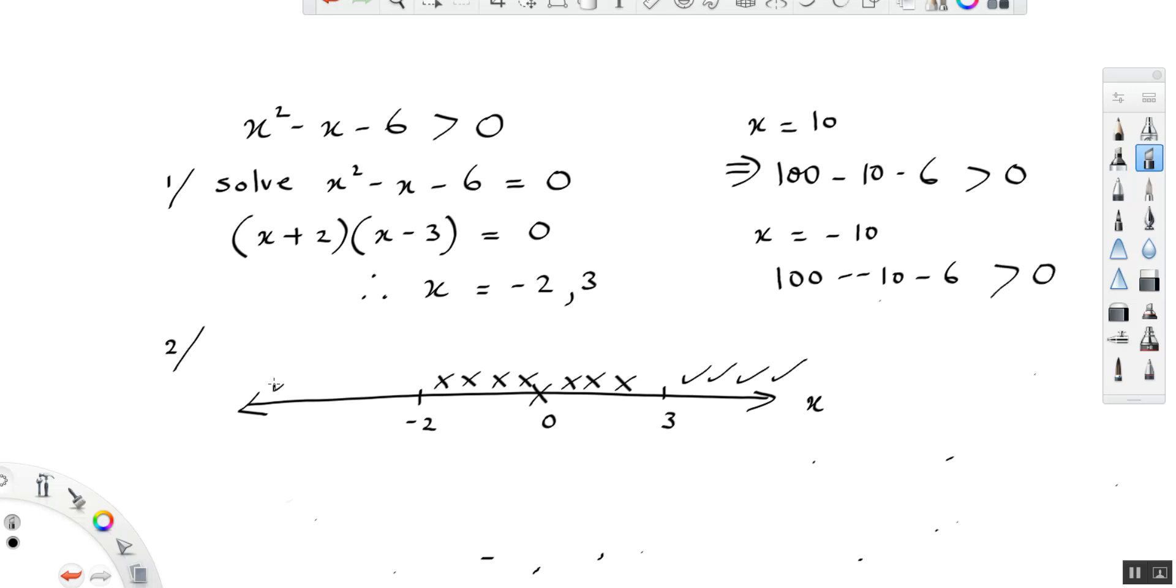And so this region also will give us values that are greater than 0. And so we end up with two possibilities. So our solution to x squared minus x minus 6 is greater than 0 is in two parts.